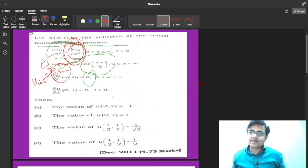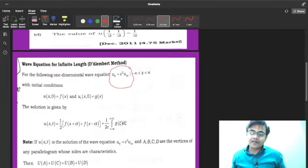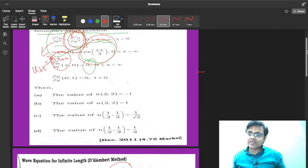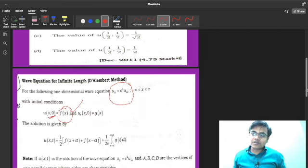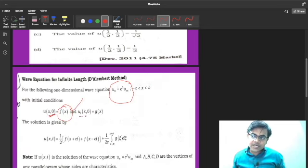In the question, in place of f(x) you can see cos(πx/2). Because you can see this condition u(x,0) equals f(x), so f(x) is cos(πx/2). In the question, in place of g(x) you can see 0. In the theory you can see u_t(x,0) is g(x), so your g(x) is 0.